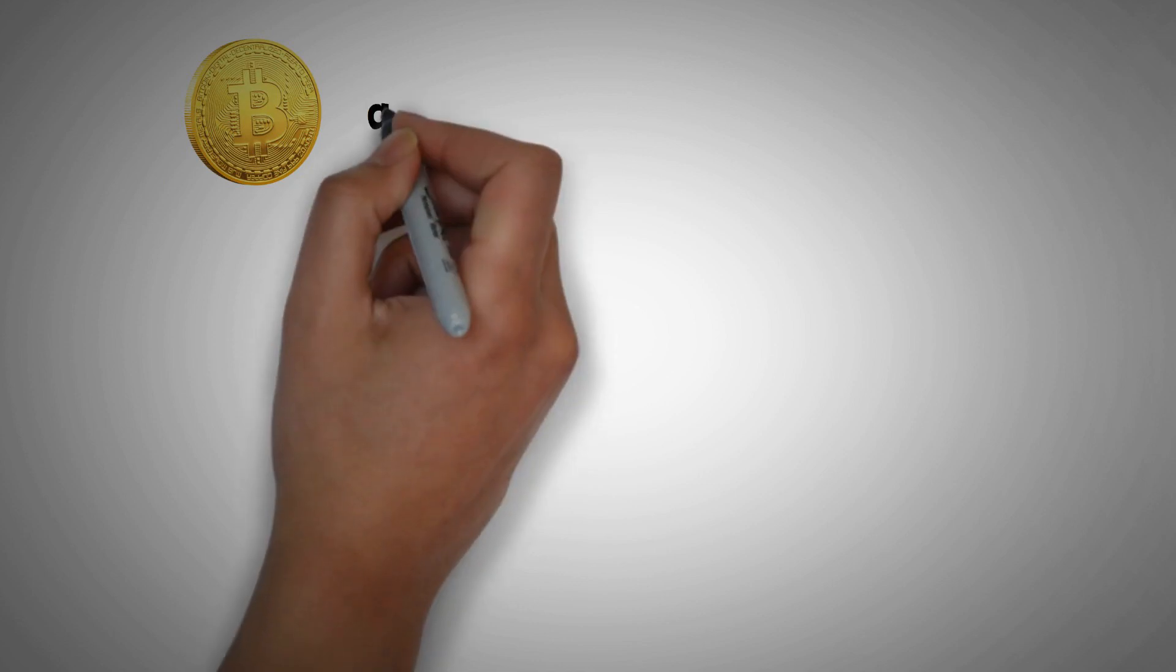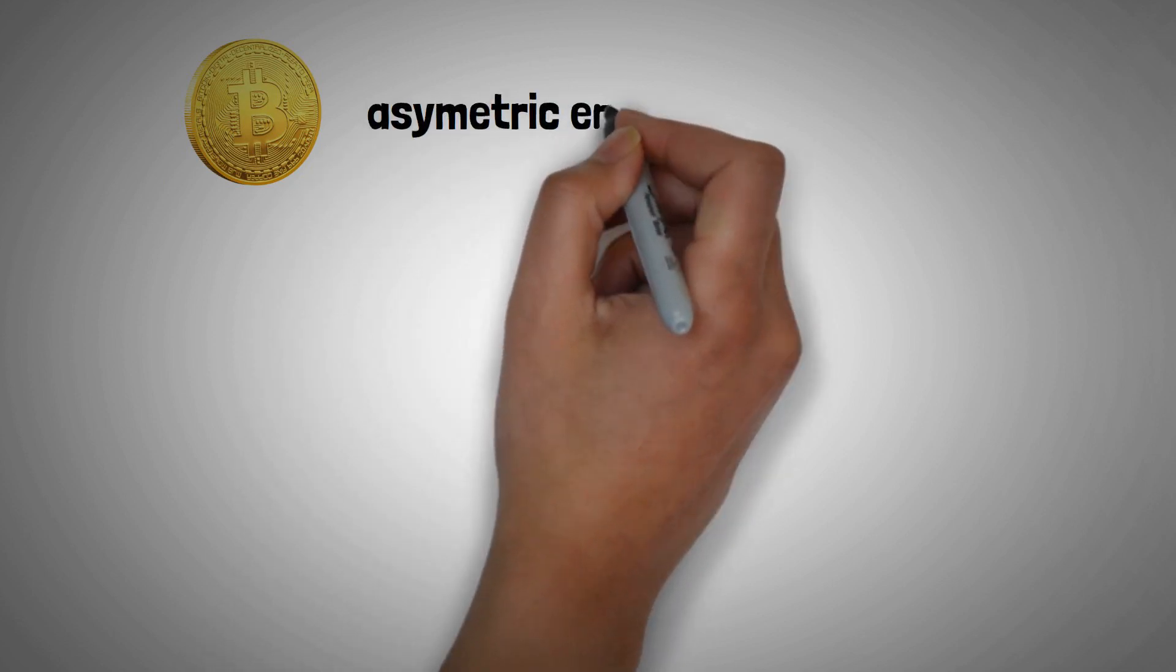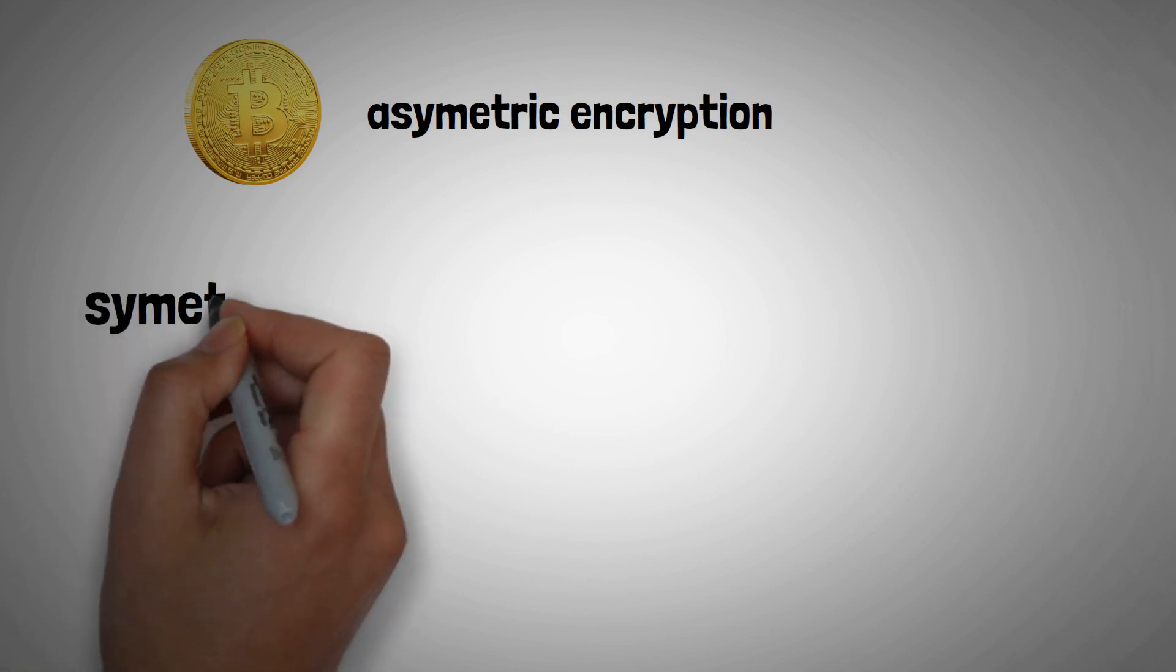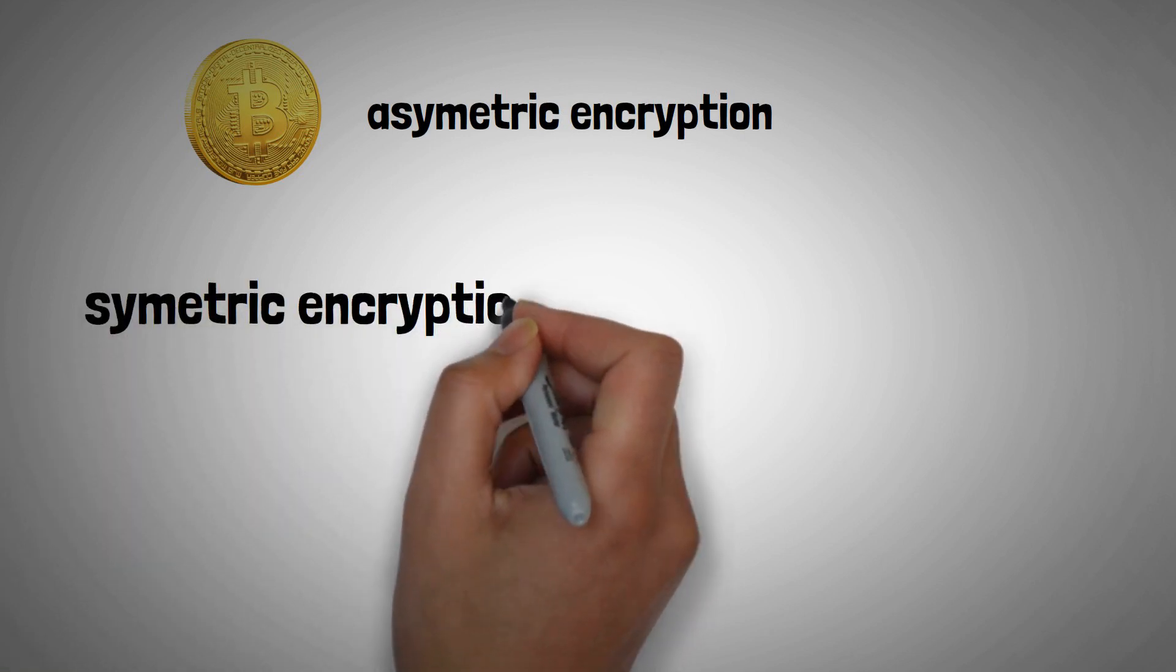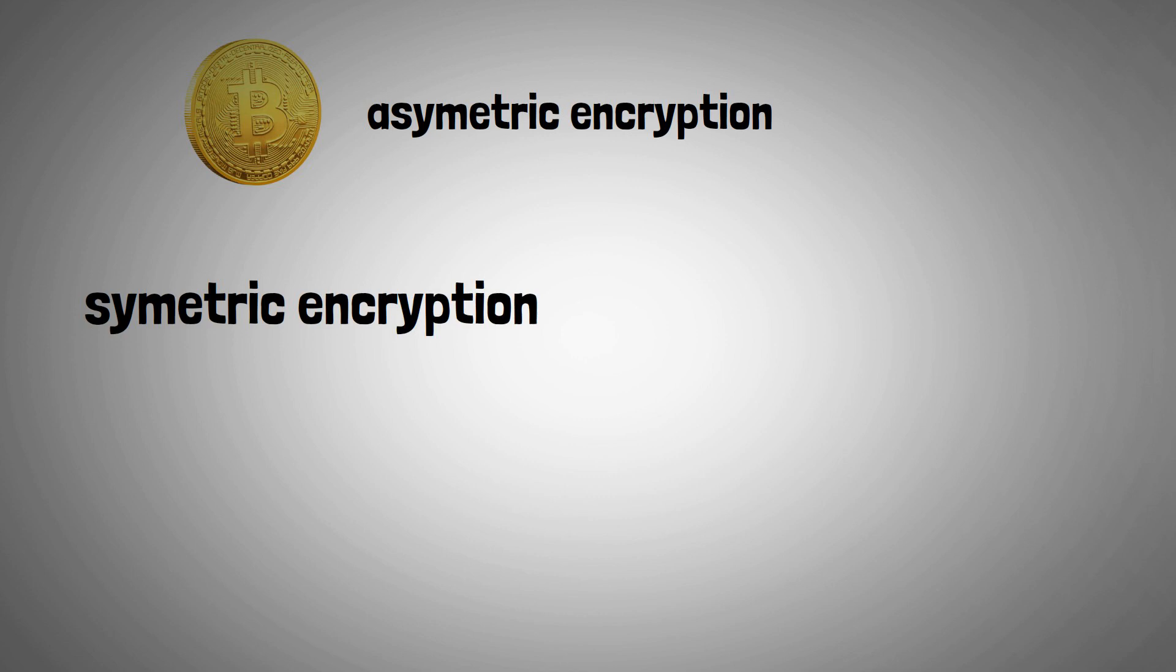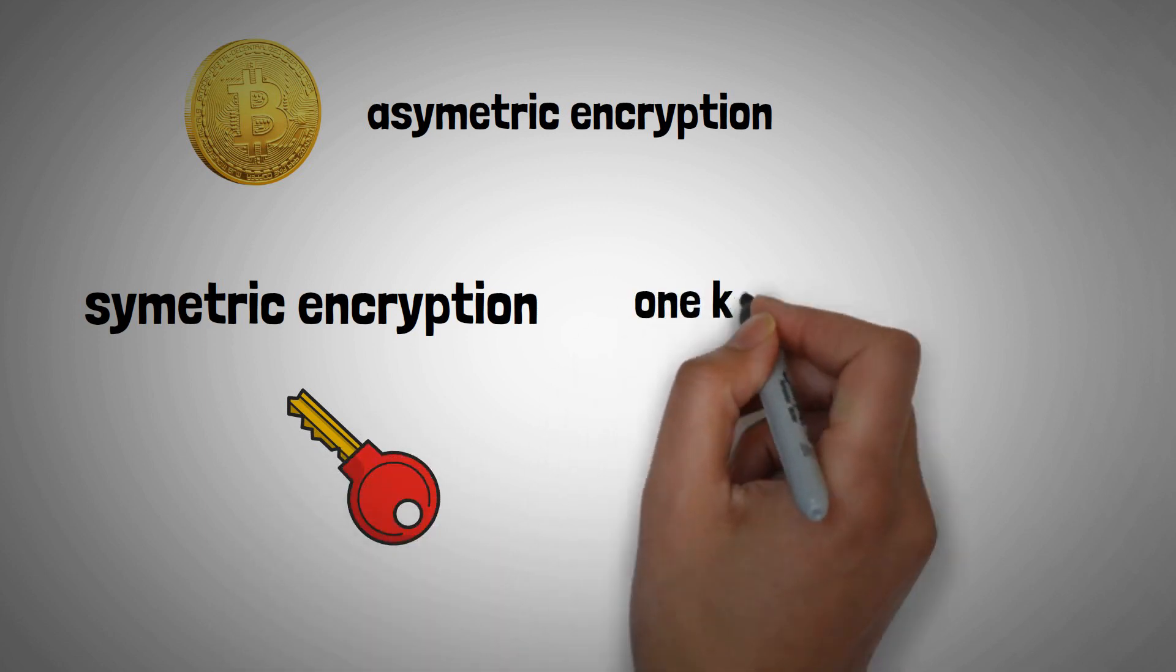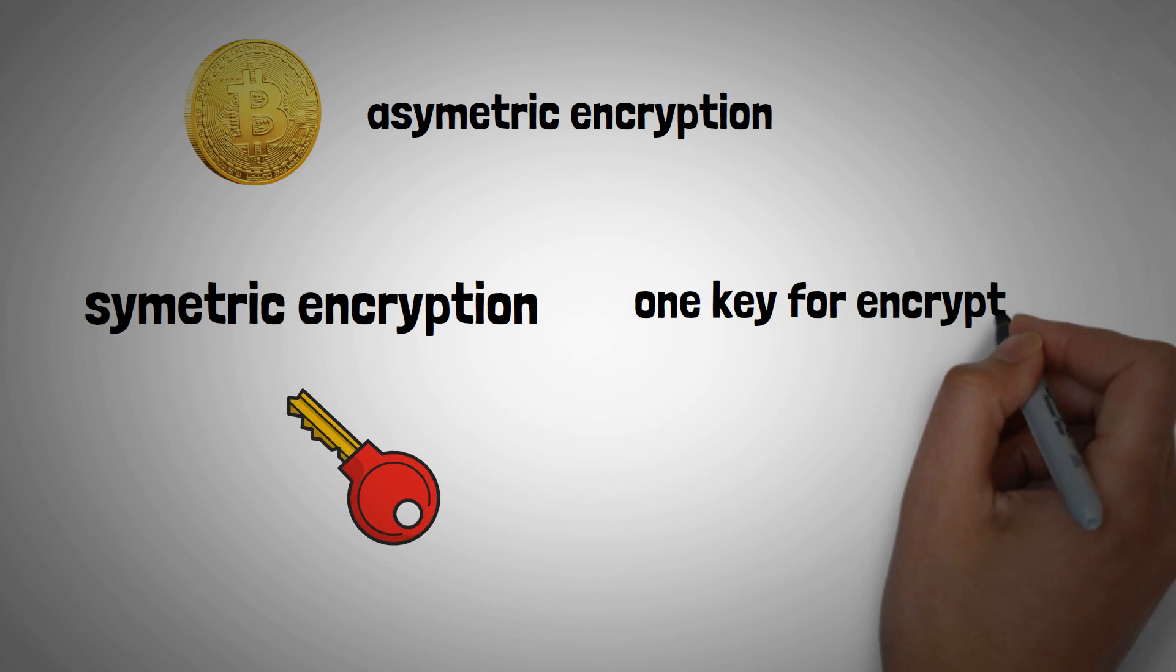Cryptocurrencies use asymmetric encryption, contrary to what was used before which is symmetric encryption. What is the difference between symmetric and asymmetric encryption? Symmetric encryption is a type of encryption which uses only one key for both encryption and decryption of messages.